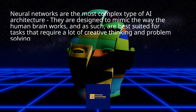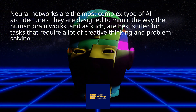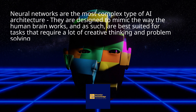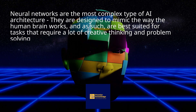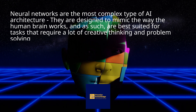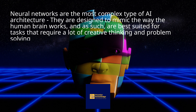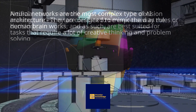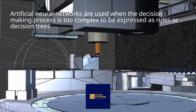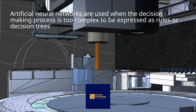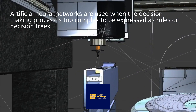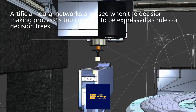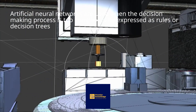Neural networks are the most complex type of AI architecture. They are designed to mimic the way the human brain works, and as such are best suited for tasks that require a lot of creative thinking and problem-solving. Artificial neural networks are used when the decision-making process is too complex to be expressed as rules or decision trees.